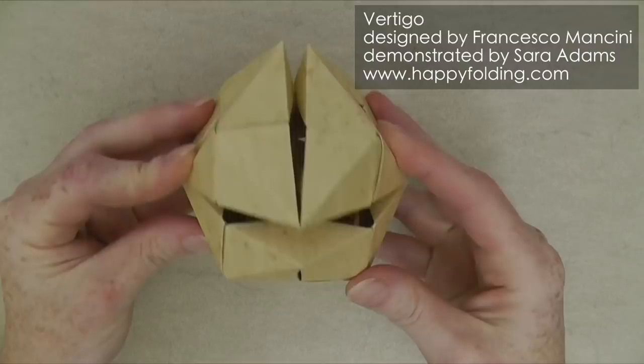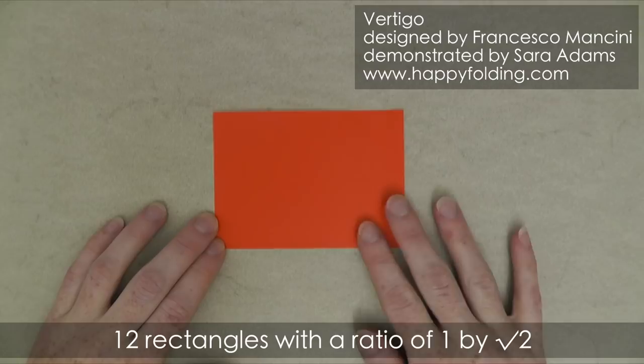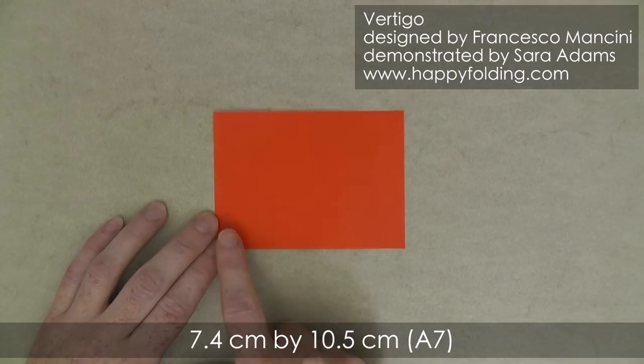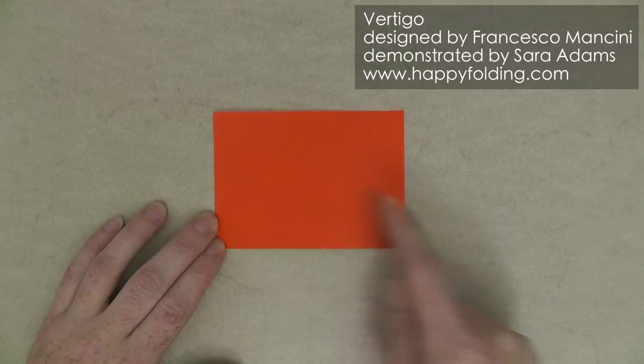You can also try using light cardstock. You'll need 12 rectangles with a ratio of 1 by square root of 2, for example 7.4 cm by 10.5 cm, or 3 inches by 4 and a quarter of an inch.